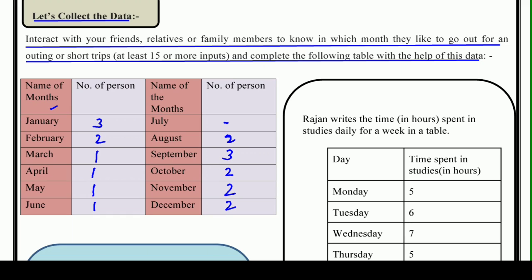In October, two want to go; November, two; and December, two. We adjust slightly to make it a total of 22 people's data collected. So this is how we make a table — this is called collection of data. Our purpose was to find out how many people want to go out in which month, and this is how we collect data. So for practice there is one more example — let's try to understand.